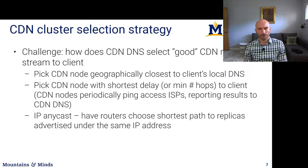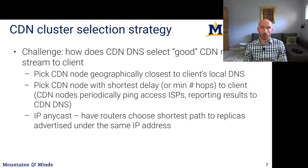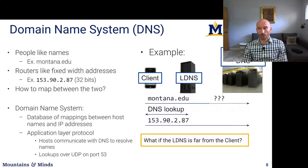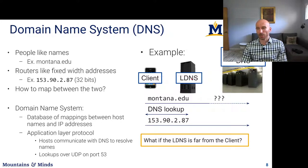Another approach is IP anycast, which we'll discuss more at the network layer. Anycast allows multiple servers to share the same IP address, and the network routing algorithms automatically connect you to the closest node. The client contacts the local DNS server, which contacts the authoritative DNS to get the IP of a nearby server. That authoritative DNS looks at the location of the local DNS and returns IP addresses of servers it believes are close to that local DNS.